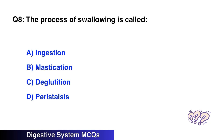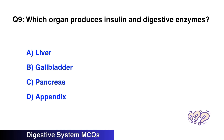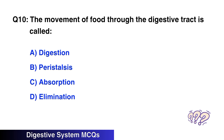Question number eight: The process of swallowing is called? The right option is C, deglutition. Question number nine: Which organ produces insulin and digestive enzymes? The right option is C, pancreas.